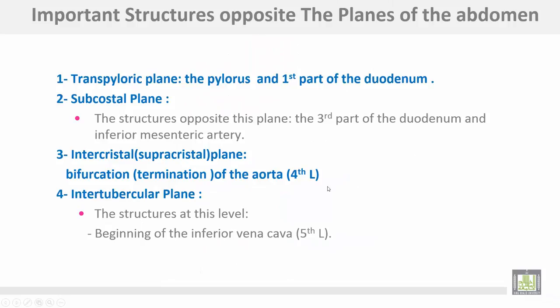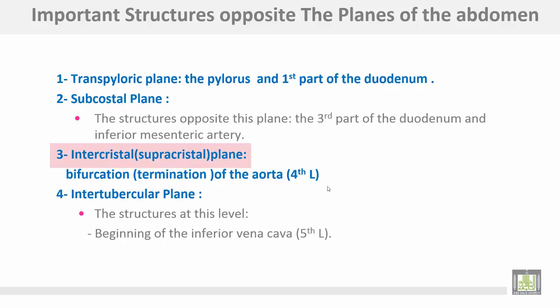Important structures opposite the planes of the abdomen. Opposite the transpyloric plane: the pylorus and various parts of the duodenum. Opposite the subcostal plane: the third part of the duodenum and the inferior mesenteric artery. Opposite the intercrystal or supracrystal plane: the bifurcation or termination of the abdominal aorta, opposite the fourth lumbar vertebra. At the intertubercular plane: the beginning of the inferior vena cava, opposite the fifth lumbar vertebra.